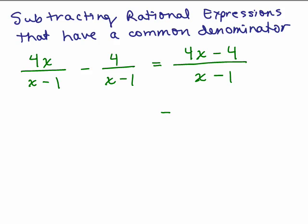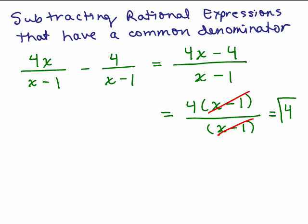The next step is to see if you can factor and cancel anything at all, and the numerator does factor because there's a common factor of 4, so we have 4 times x minus 1. The denominator x minus 1, that's already factored as far as it could go, and so the x minus 1's cancel. So our answer is 4.